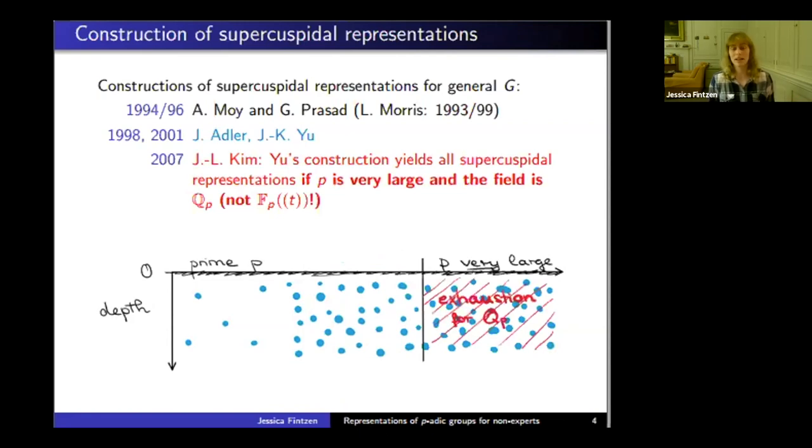Everything we prove for Yu's construction holds true in full generality. Unfortunately, she had to assume that the field is Q_p. We are not allowed to use Laurent series over a finite field. Nevertheless, this was a great result.